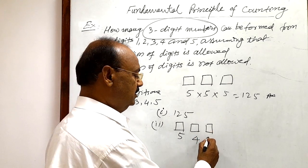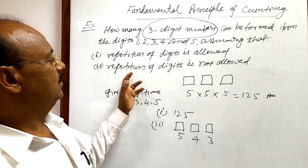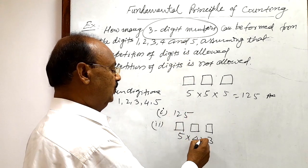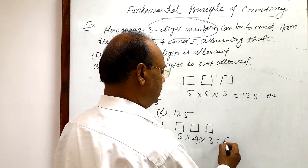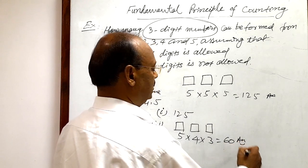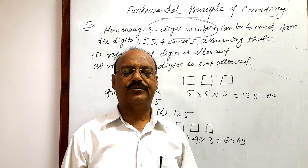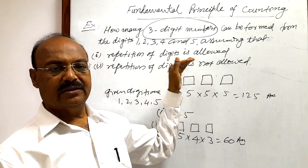So the total number of three digit numbers when repetition of digits is not allowed is, by fundamental principle of counting, multiply these different places. So this is equal to 60. This is the answer. So this fundamental principle of counting is very useful to solve the problems given in this pattern.